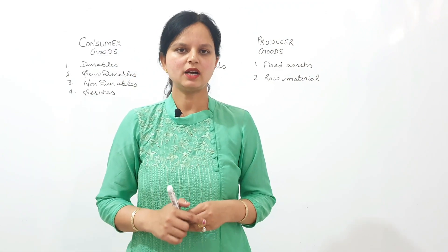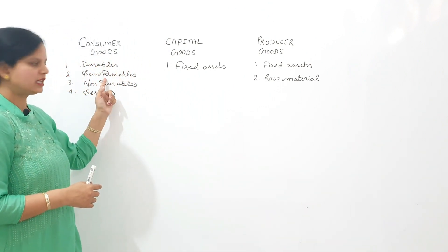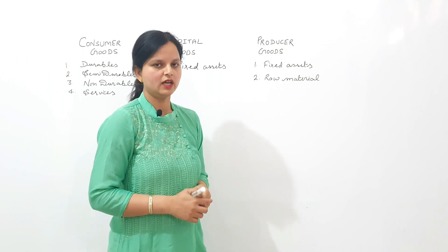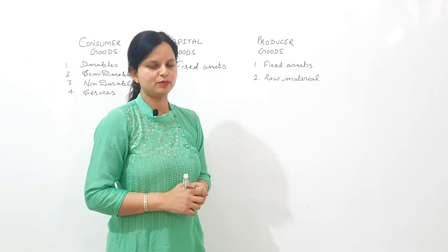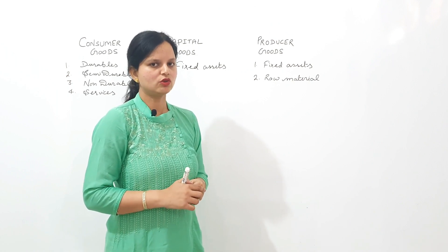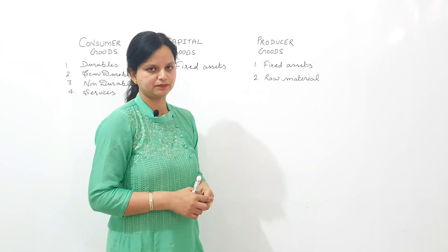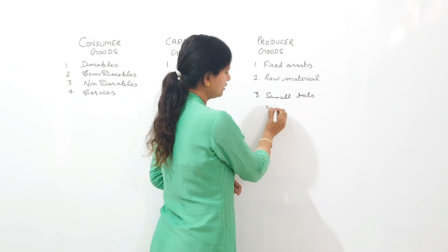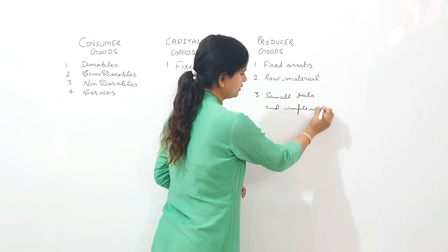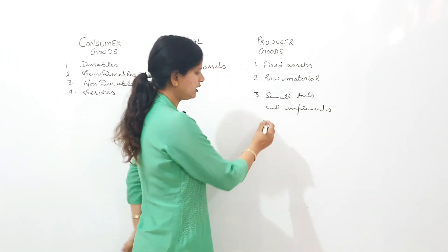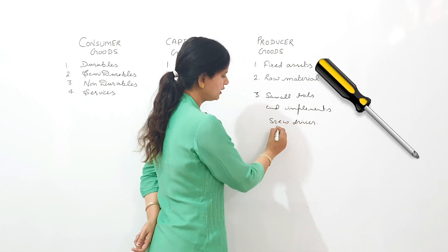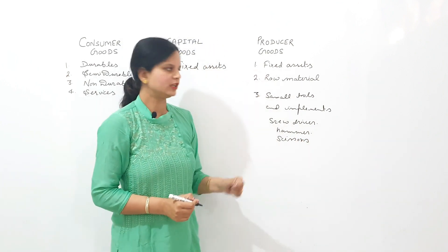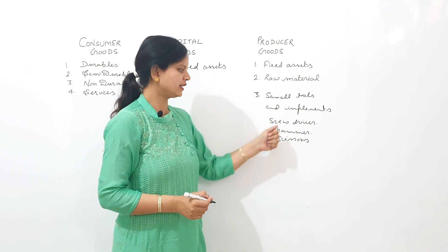Before starting the new concept, I am repeating the previous concept. Consumer goods include durable, semi-durable, non-durable, and services. Capital good includes fixed assets only. Producer good includes fixed assets as well as raw material. In the previous video, I told you that scissors purchased by a tailor is not a capital good because it is not of very high value. It will be included in producer good, because producer good includes small tools and implements used in the production of other goods, like screwdriver, hammer, and scissors.